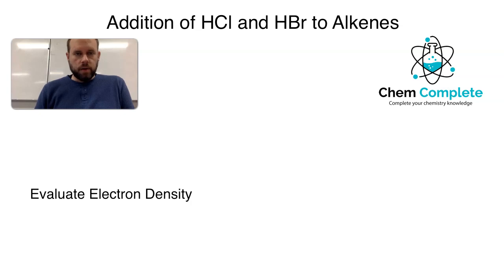Hi there, everybody. Welcome to another Chem Complete episode. In today's lecture, we're going to take a look at alkene reactions. We're going to see how the acidic halogens can add to a set of pi bonds and what would be the expected outcome in that situation.